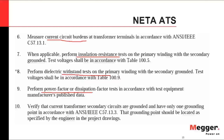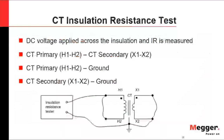For CT insulation resistance testing, it is typical practice to perform the test at voltages below 1000 volts. We create test electrodes by shorting terminals — in this case H1 to H2 — and the other electrode is typically X1, X2, and ground. Different parameters and configurations can be used. The goal is to confirm the current transformer can handle the voltage level at which it has been classified.